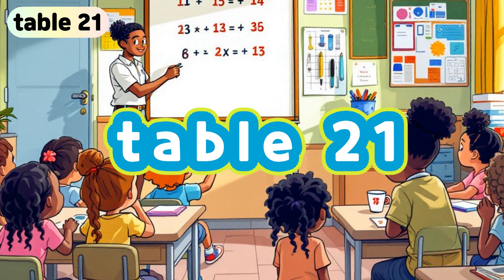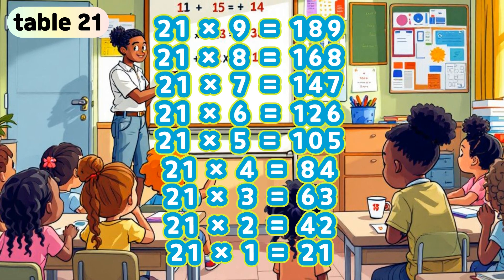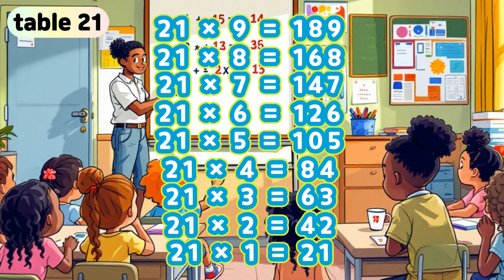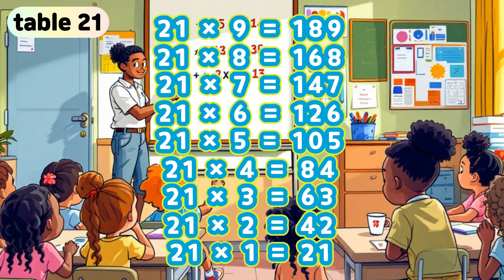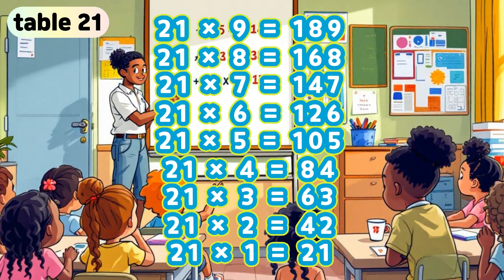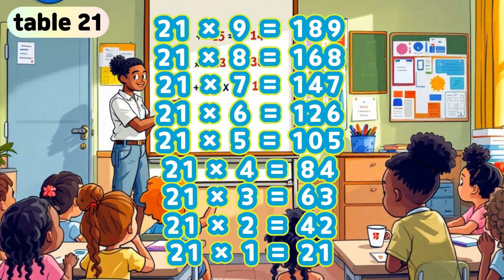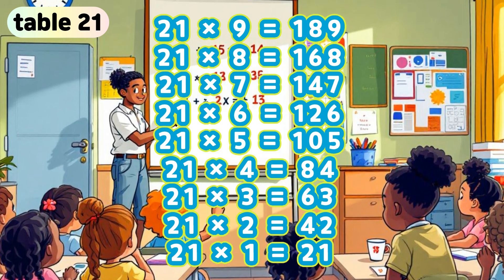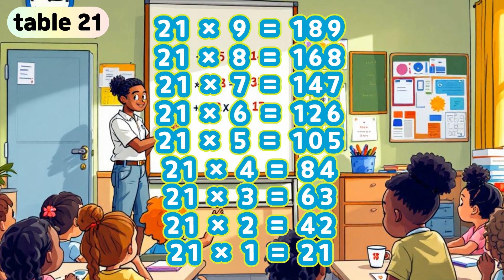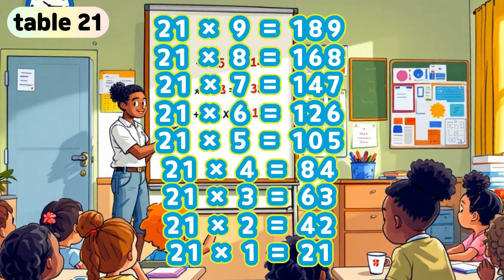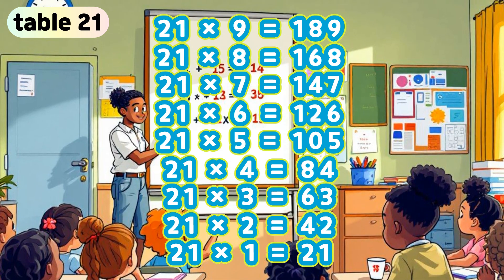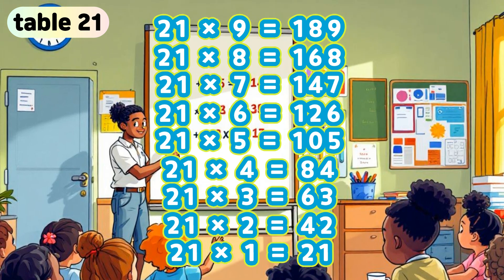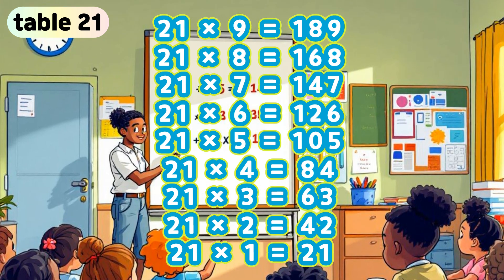Table 21. 21 times 9 is 189. 21 times 8 is 168. 21 times 7 is 147. 21 times 6 is 126. 21 times 5 is 105. 21 times 4 is 84. 21 times 3 is 63. 21 times 2 is 42. 21 times 1 is 21.